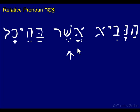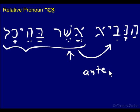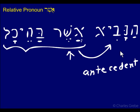Asher is not marked for gender or anything like that — it's just Asher. It introduces this whole relative phrase and links it to, or modifies, 'prophet.' So 'prophet' is our antecedent — A-N-T-E-C-E-D-E-N-T. Asher points to its antecedent, much like pronouns point to an antecedent.